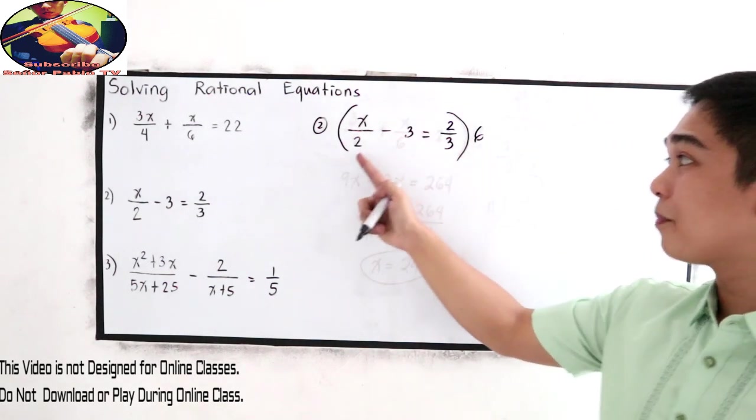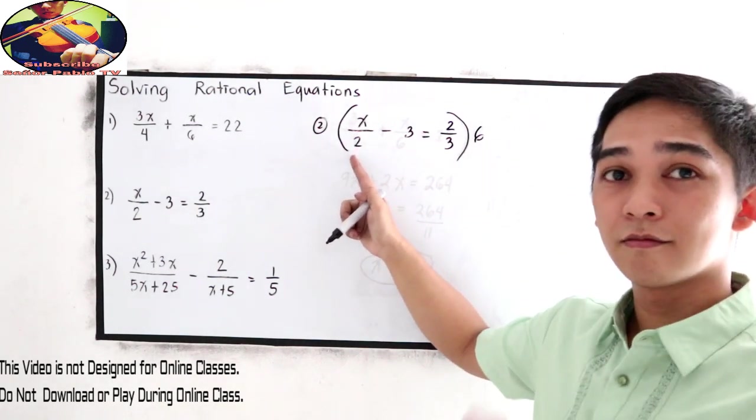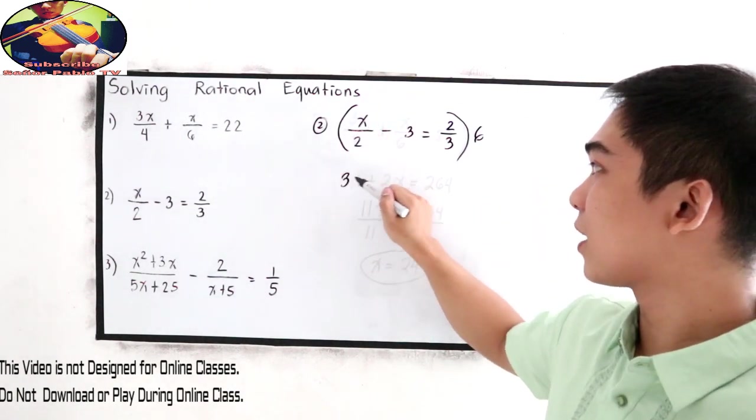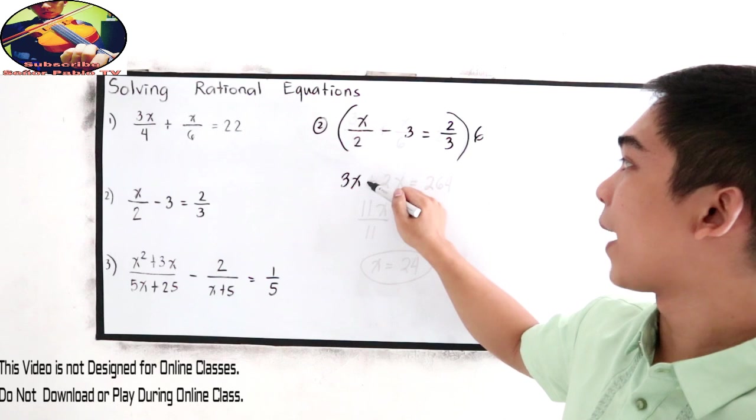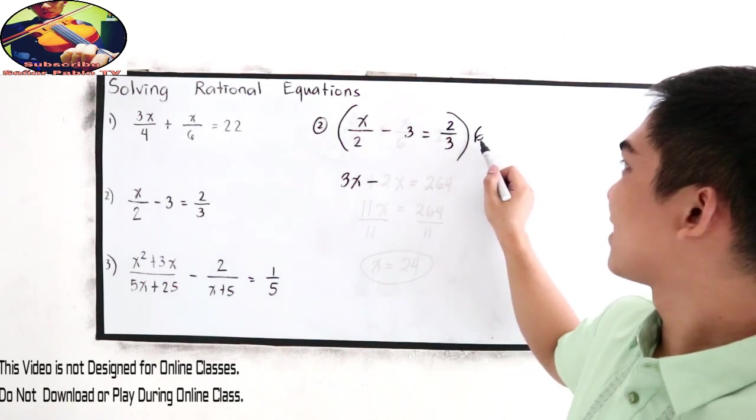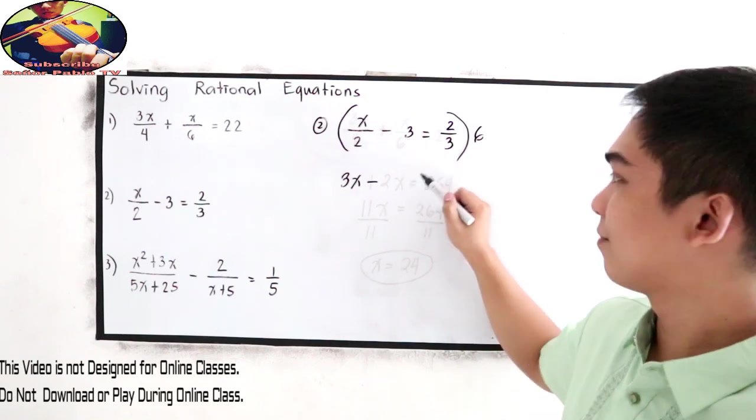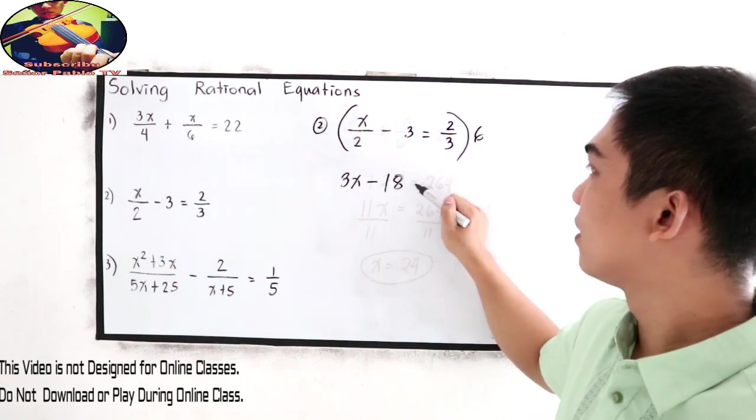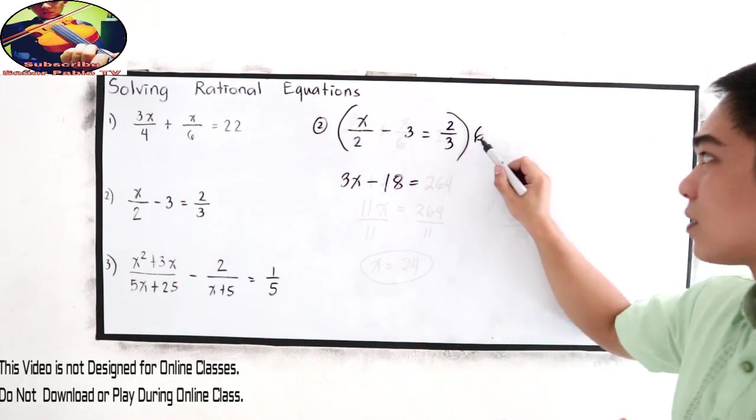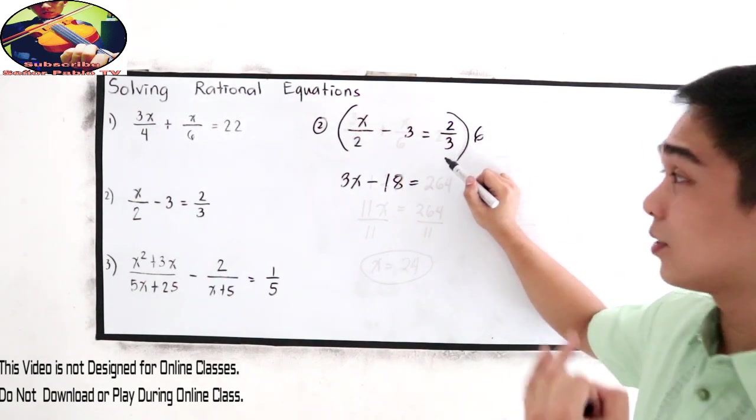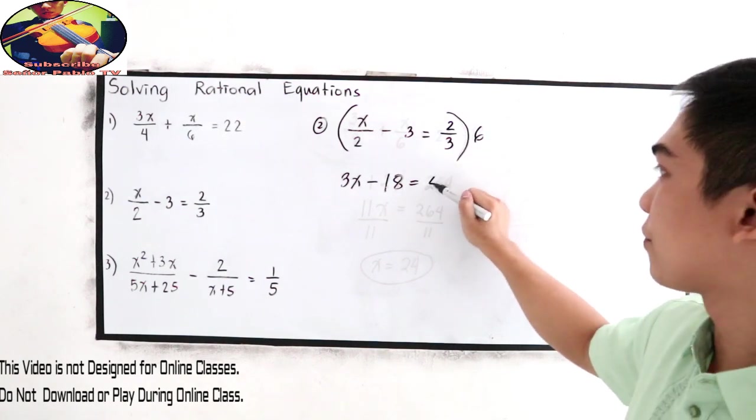6 divided by 2, that is 3 times x. So we have 3x minus 6 times 3, which is 18, is equal to 6 divided by 3, that is 2 times 2, which is 4.